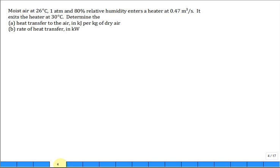Moist air at 26°C and 1 atm and 80% relative humidity enters a heater with a volumetric flow rate, I'll call that AV for volumetric flow rate, 0.47 meters cubed per second. It exits the heater at 30 degrees C, so it went from 26 to 30. It's heated, it's being heated.